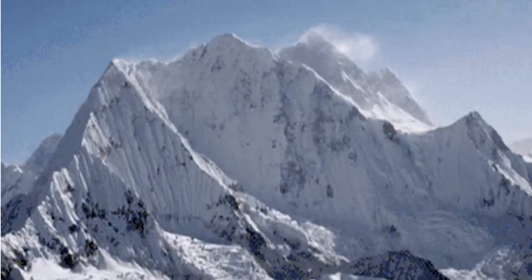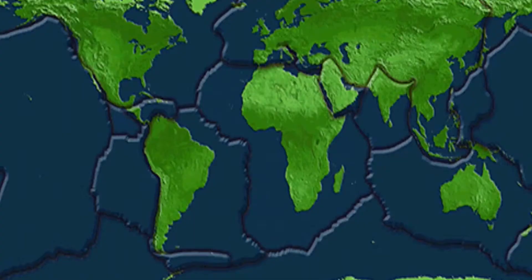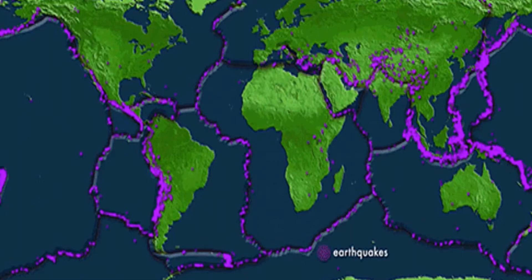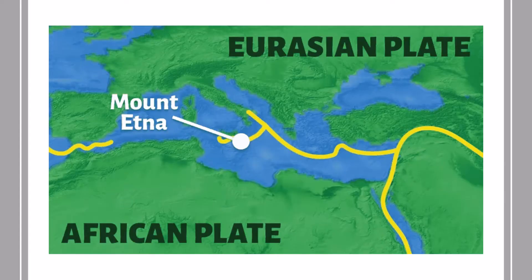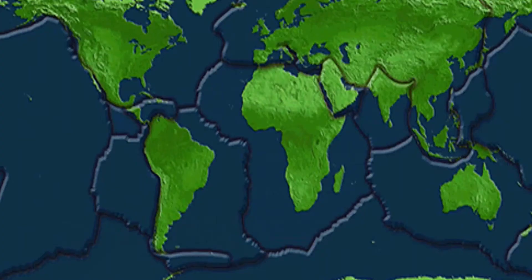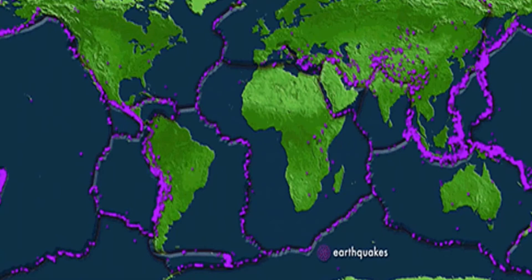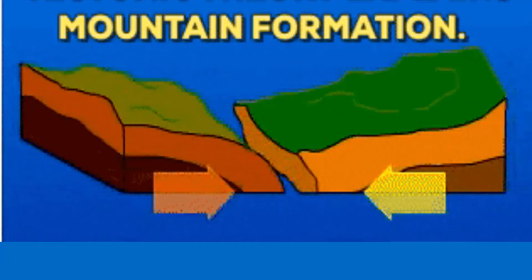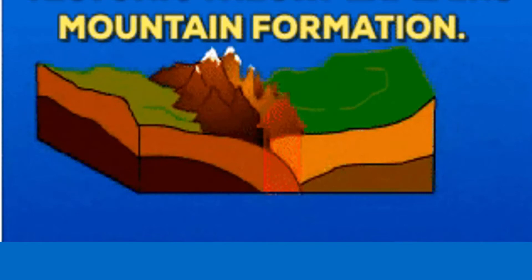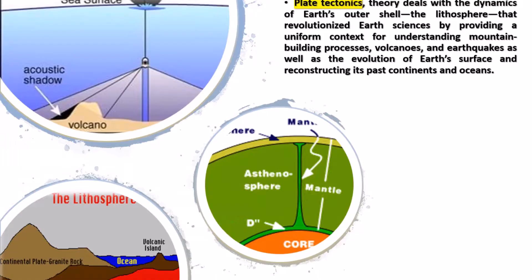The highest mountain range above sea level, the Himalayas, was formed 55 million years ago when the Eurasian and Indo-Australian continental plates converged. The Mediterranean island of Cyprus formed at a convergent boundary between the African and Eurasian plates. Hardened mounds of lava, called pillow lavas, were once on the bottom of the ocean where this convergence occurred, but have been pushed up and are now visible at the surface.